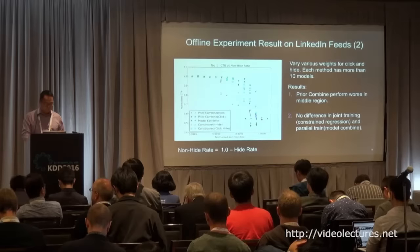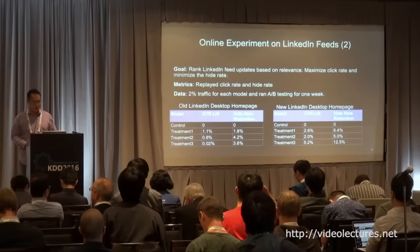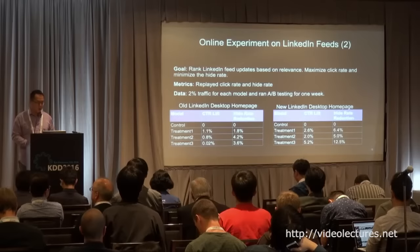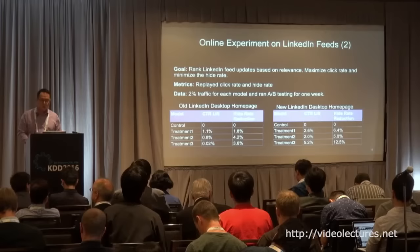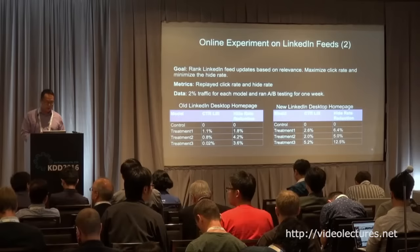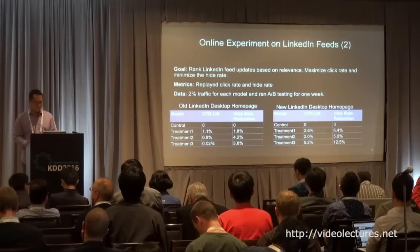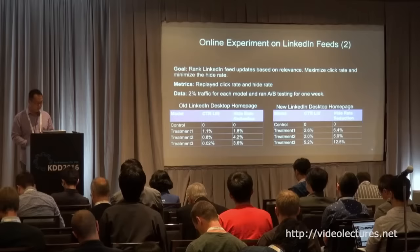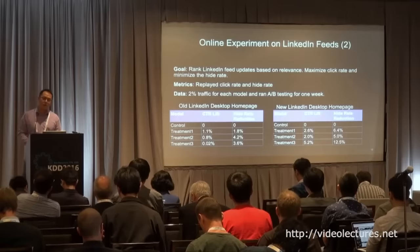We also did online experiments. For the constraint regression, after training the model, we deployed it online and ran an A/B test on about 2% of traffic for one week. We measured clicks per member for the treatment bucket and compared it to the control model, which only optimizes CTR. We also tracked the hide rate. The results are very good — incorporating the hide signal can also help build a better CTR prediction model.